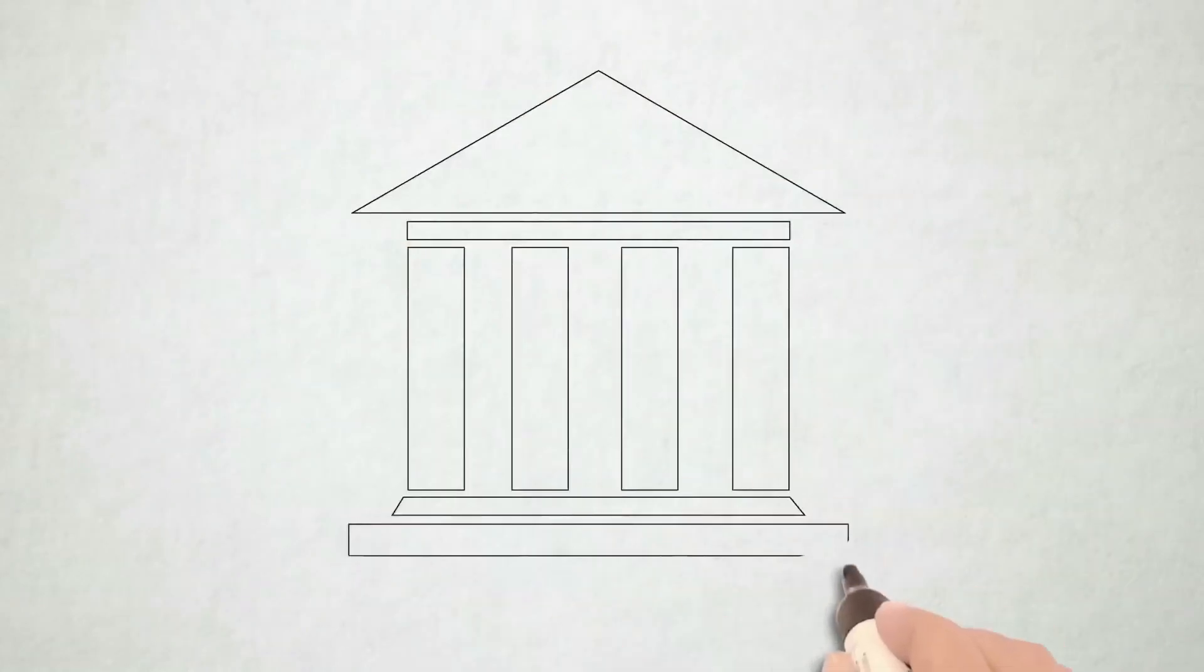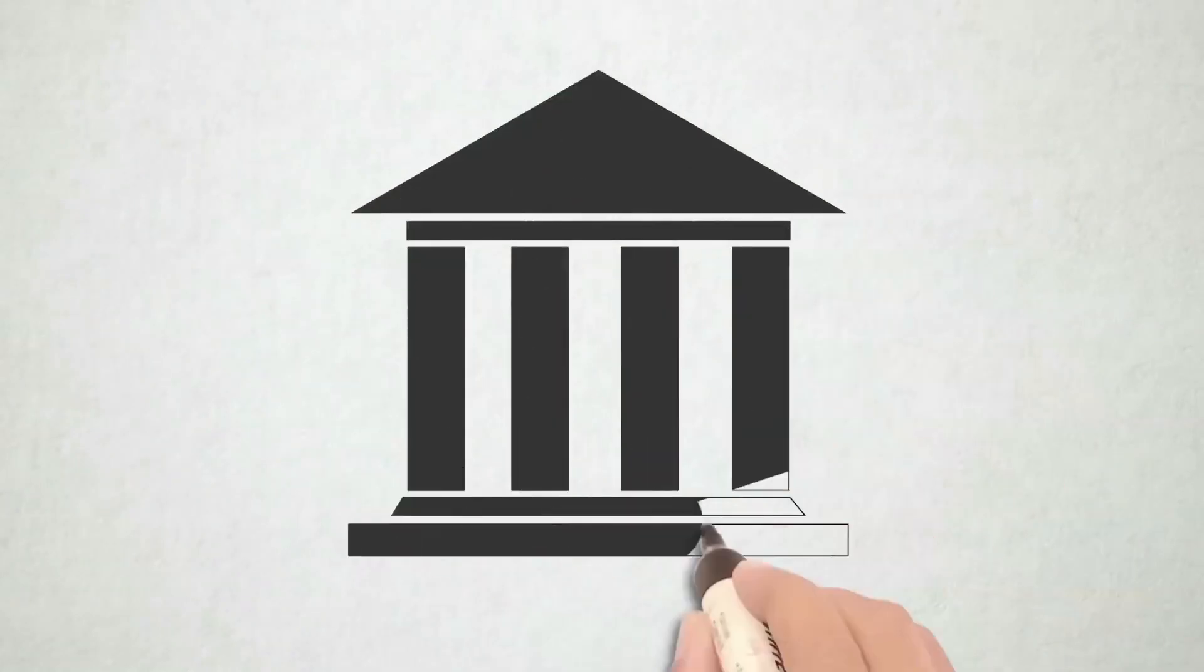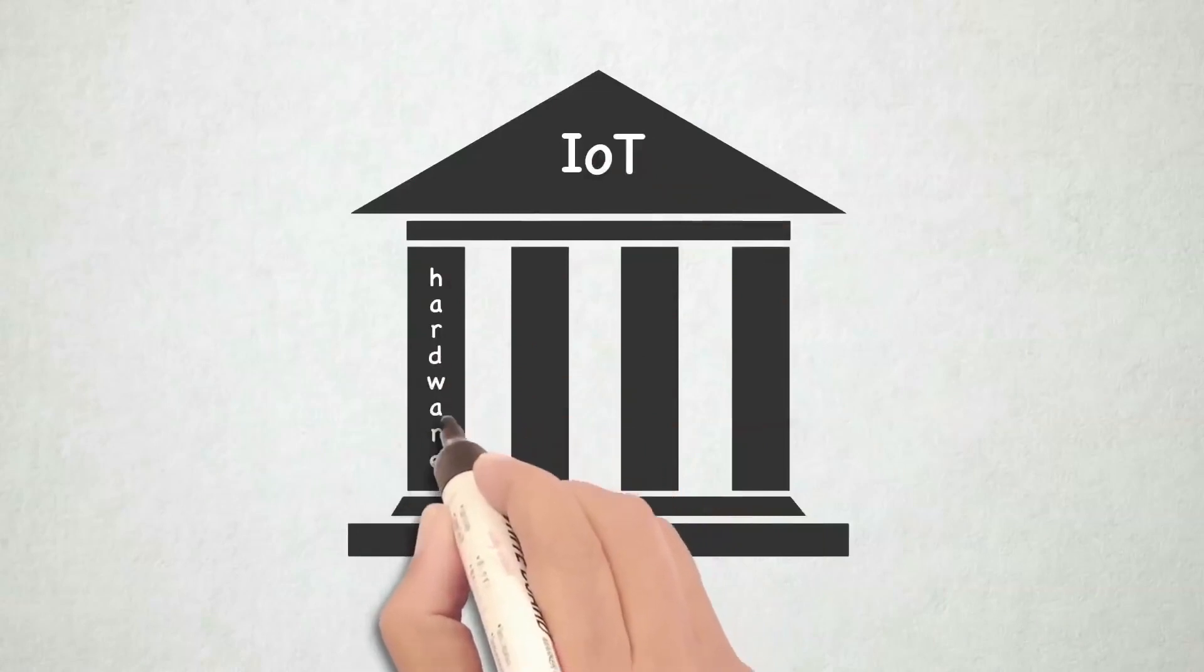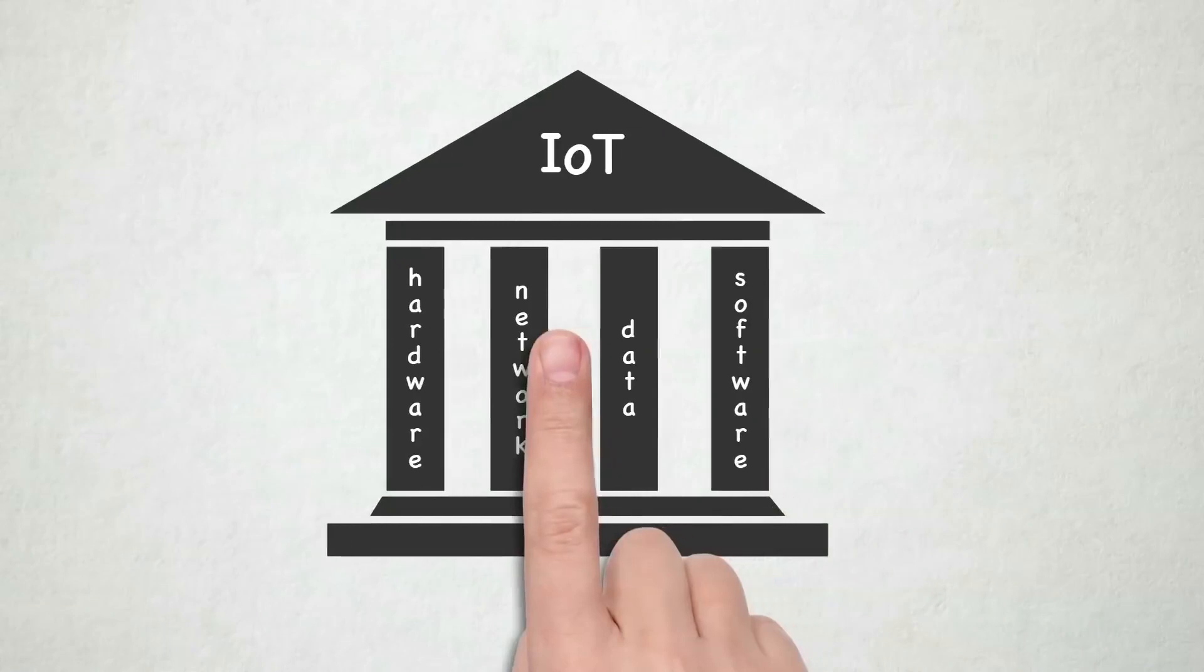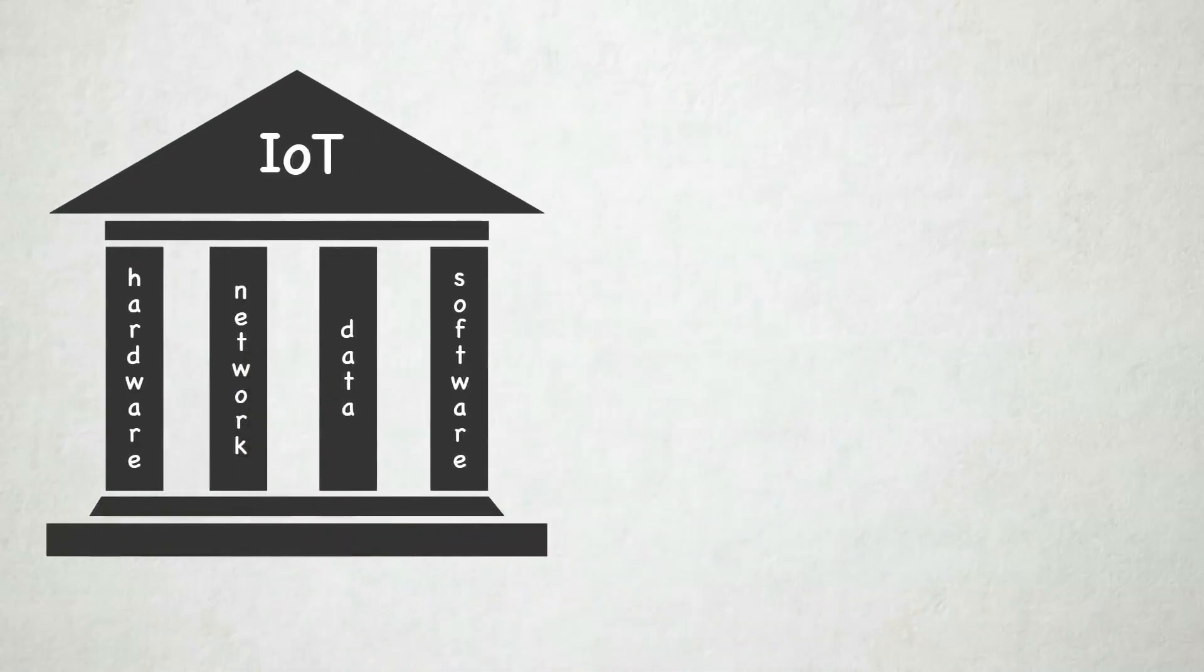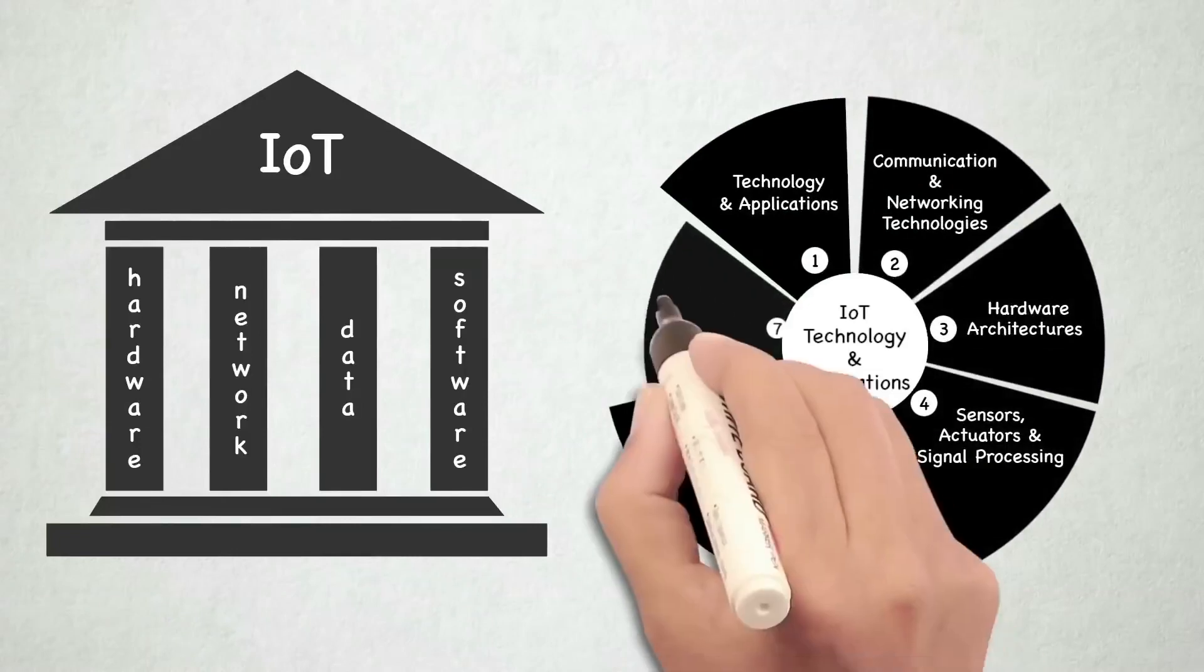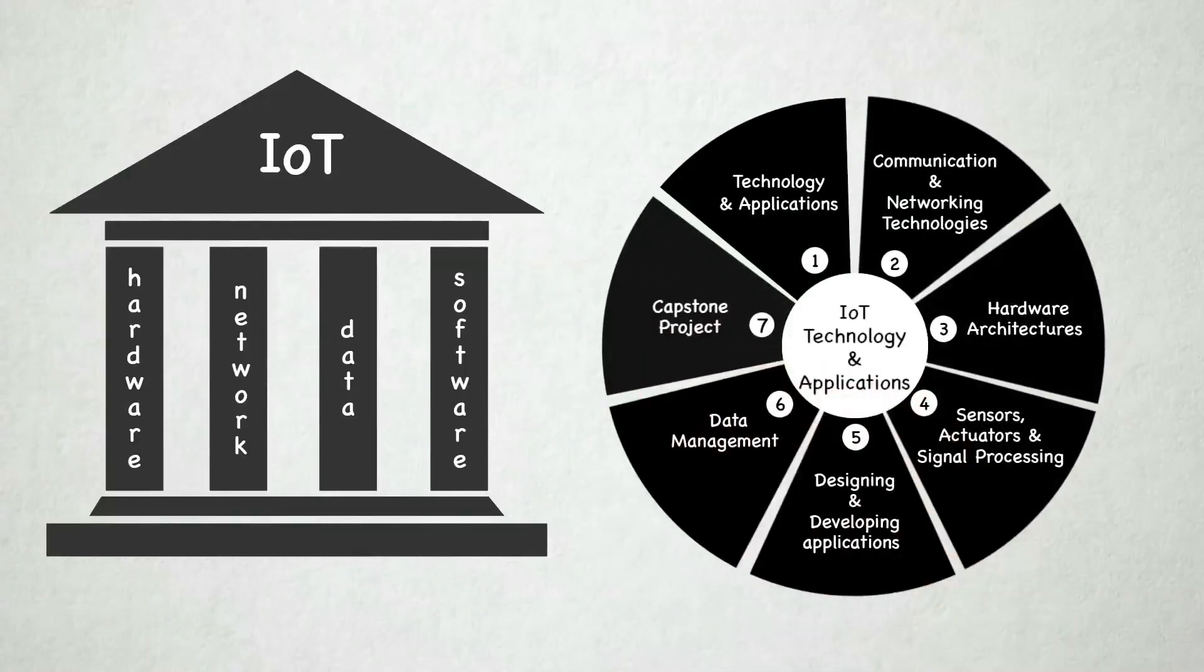IoT systems are founded on four building blocks: the hardware, the network, the data, and the application software that brings them all together. This program has six courses and a capstone project that capture the essence of these four building blocks.